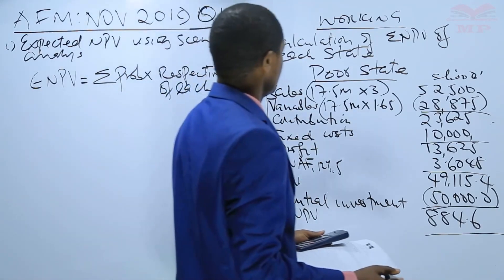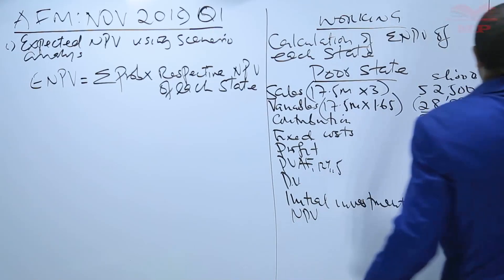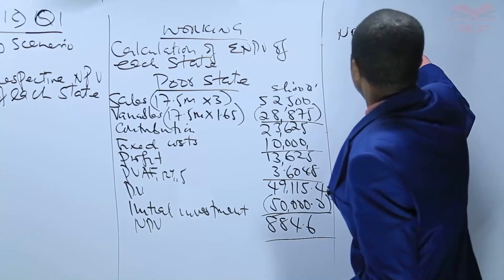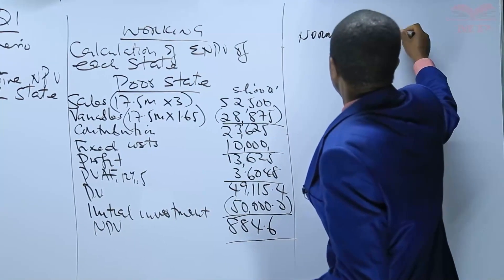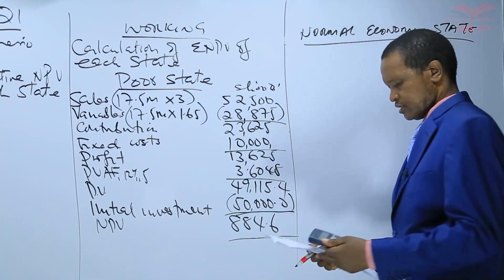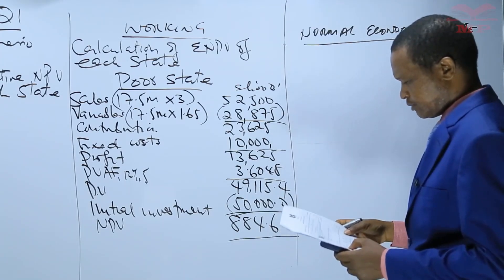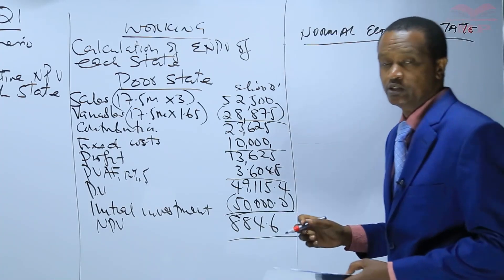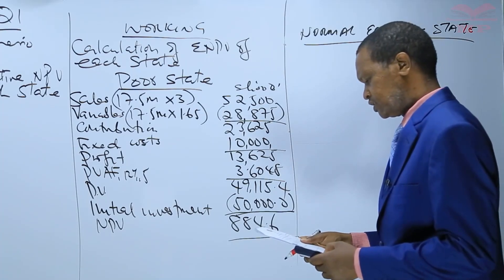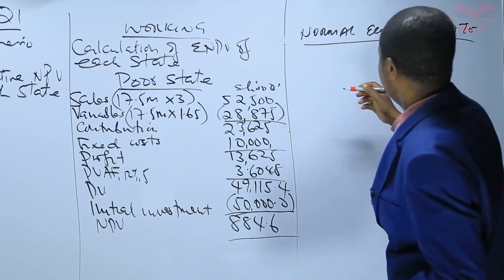Next, we calculate the NPV when the economy is normal. For the normal economic state, the units sold are 20 million. We don't need to recalculate because this was already calculated in part one above, where 20 million units were expected to be sold. So the NPV under the normal economic state is as calculated above.